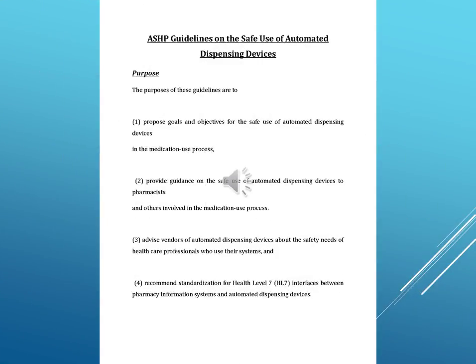ASHP Guidelines on the Safe Use of Automated Dispensing Devices. Purpose: The purposes of these guidelines are to propose goals and objectives for the safe use of automated dispensing devices in the medication use process, provide guidance to pharmacists and others involved in the medication use process, advise vendors about the safety needs of healthcare professionals, and recommend standardization for Health Level 7 (HL7) interfaces between pharmacy information systems and automated dispensing devices.